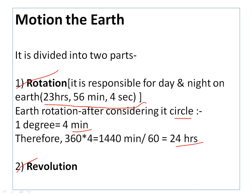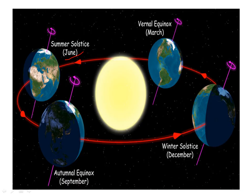The earth rotates in 24 hours. Now, revolution — revolution is when the earth orbits the sun. The earth is tilted at 23 and a half degrees. Now let's talk about summer solstice. First, what is solstice?